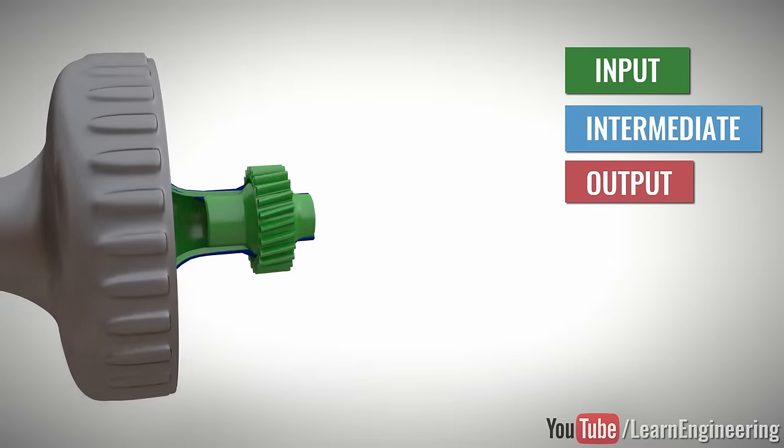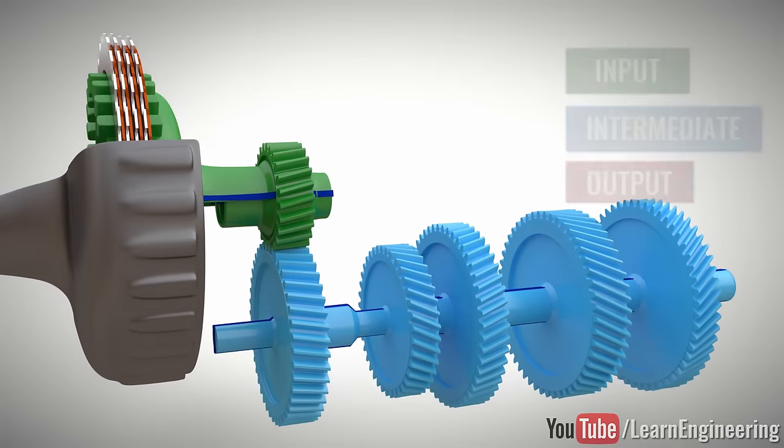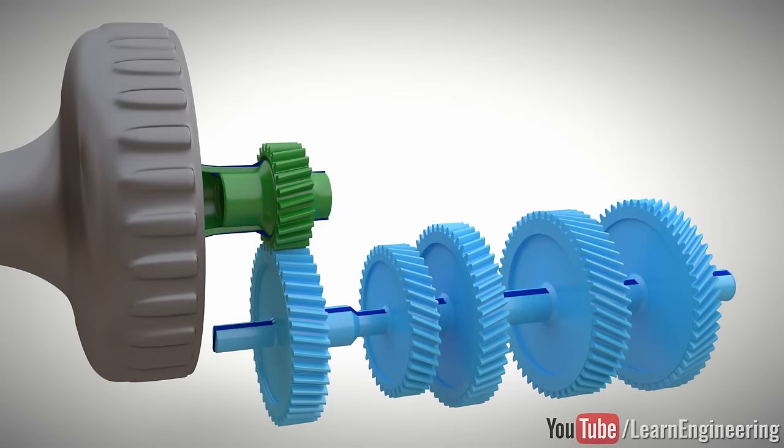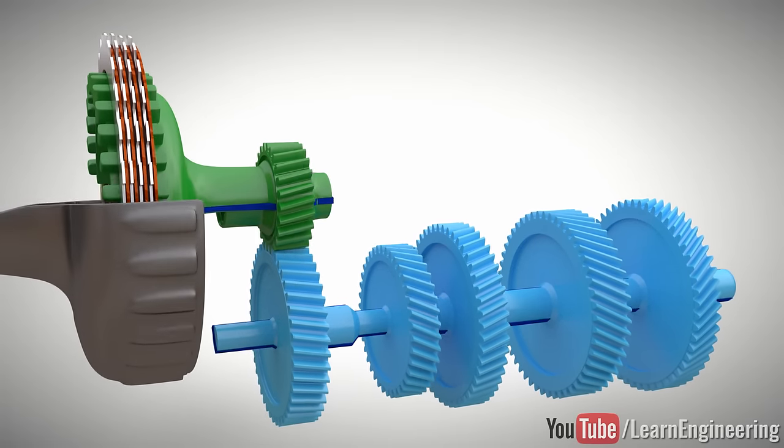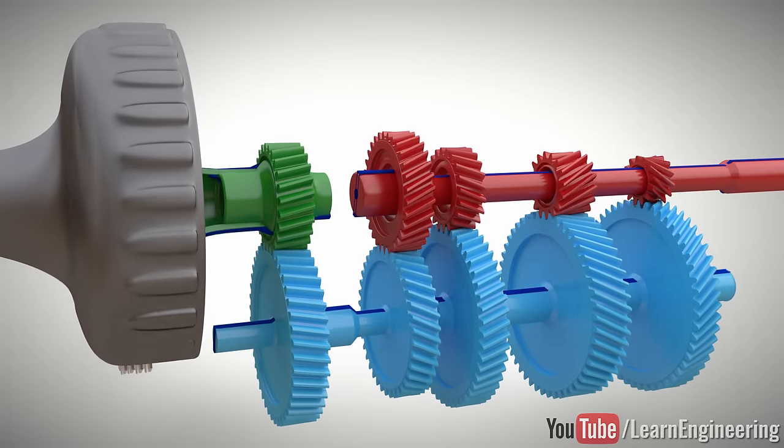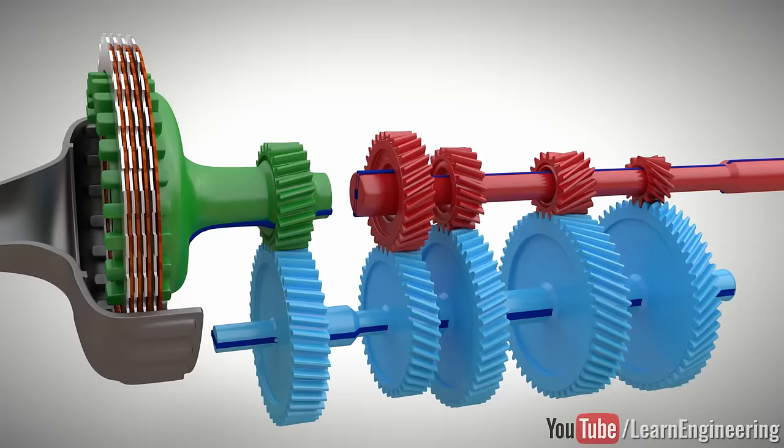The input is connected to the intermediate shaft, so the intermediate shaft always rotates at a constant speed. The intermediate shaft is then connected to the output gear set. You can see that the output gears will turn at different speeds due to different gear ratios.